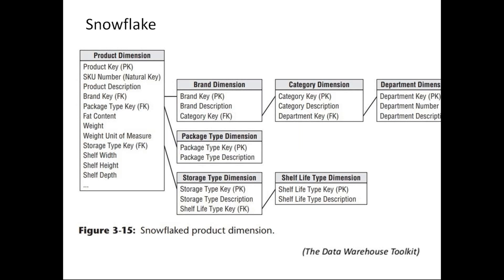With the snowflake design comes the concept of normalization. Normalizing the table means removing the duplicate information from the table, because if you have duplicate information, you repeat the same information for different records. Your data volume will increase, there would be more space needed in the database, and more space translates to more cost. So that's why we have the snowflake design, which is basically splitting the major dimension — the master dimension — into small sub-dimensions or sub-sub-categories.